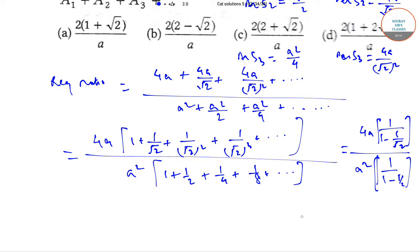now on simplifying this we get 2 into 2 plus root 2 by A that is option C